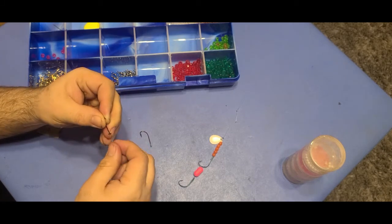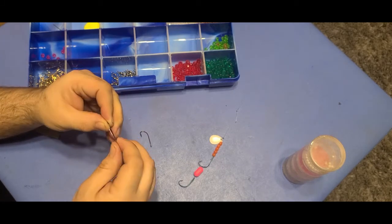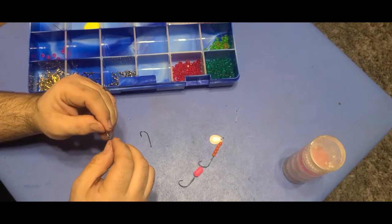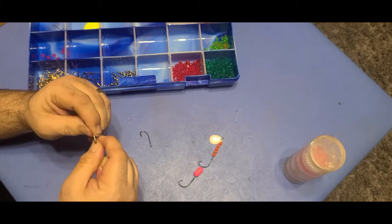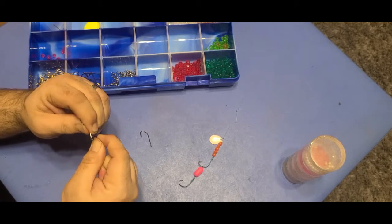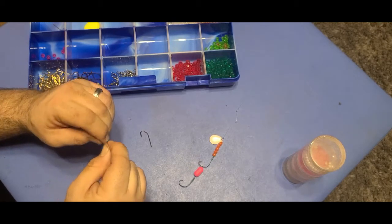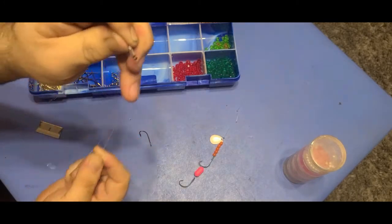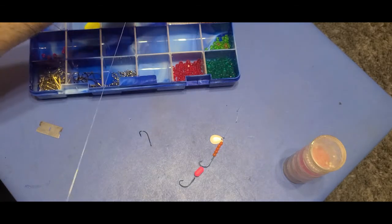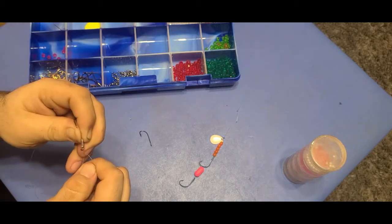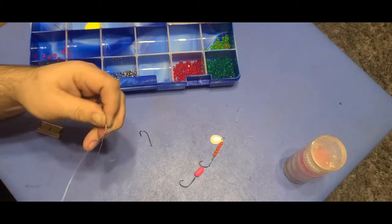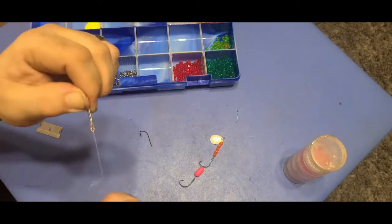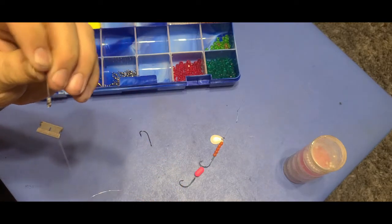You're going to run the line through. In this case I'm using 20 pound mono, though I usually use 30 but found a lot of people prefer the 20. You're gonna wrap this five, six, seven times, no real magic number. Run the other end through and pull tight. This hook will not come off. The line will snap, the hook will break long before you get it off.